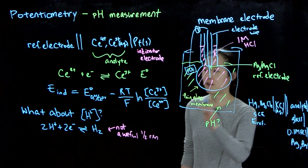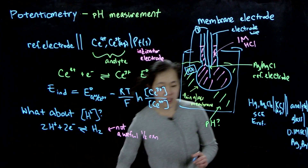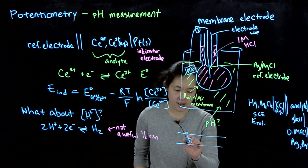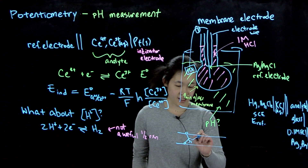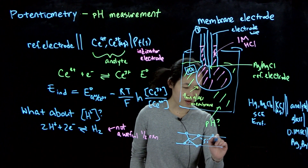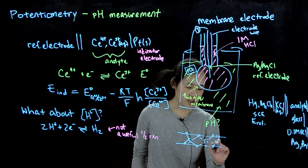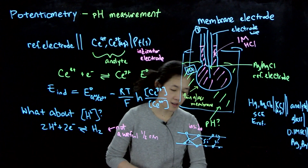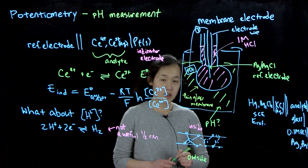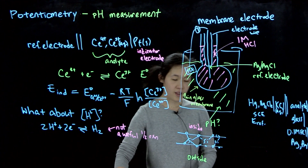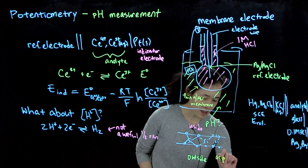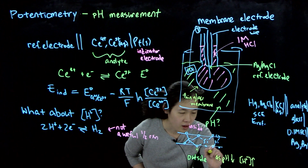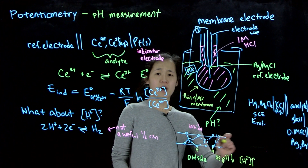The reason this works — without needing a half-reaction that transforms the protons themselves — is because glass is silicon oxide (SiO₂). On the surface of the thin glass membrane are all these little oxygen atoms. If we label inside the bulb versus outside, when your solution is very acidic — as pH goes down and proton concentration goes up — these surface oxygens become protonated, forming surface hydroxyls. This builds up a positive charge on the glass.